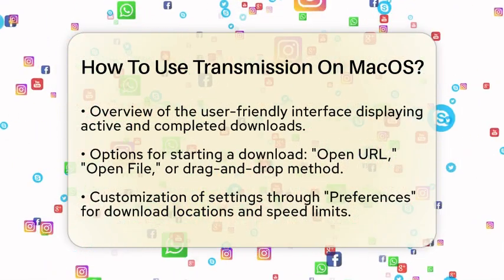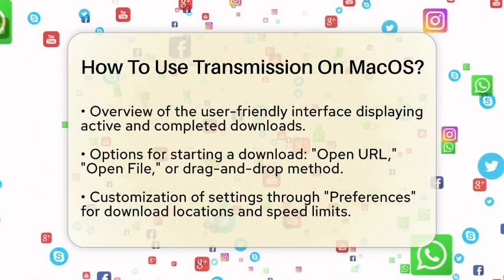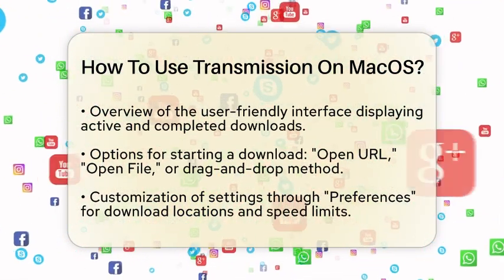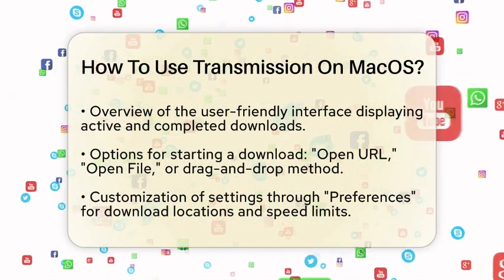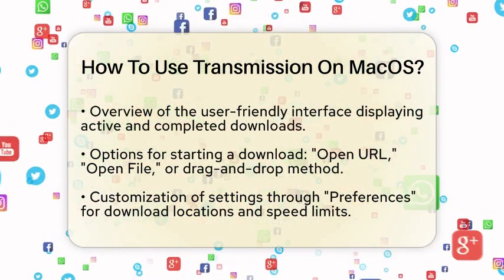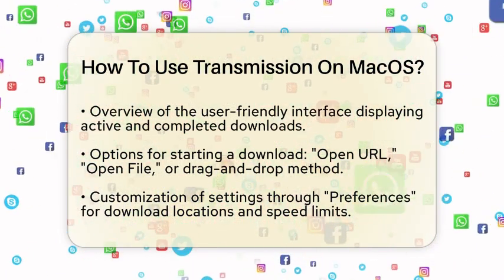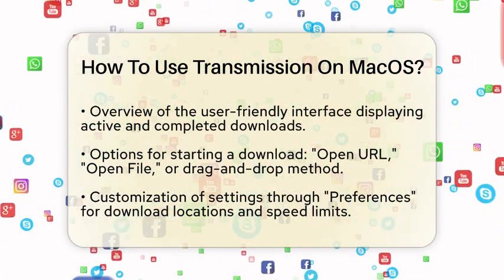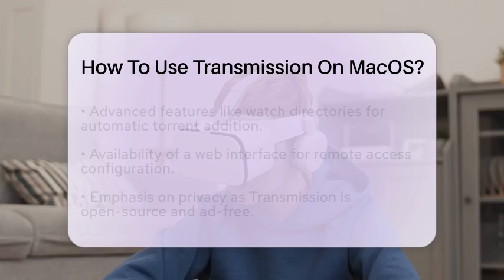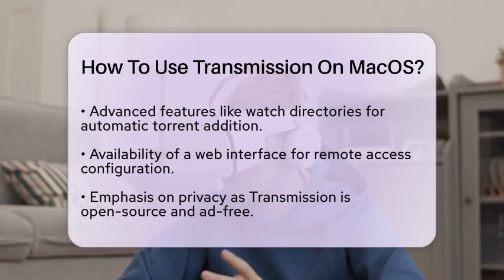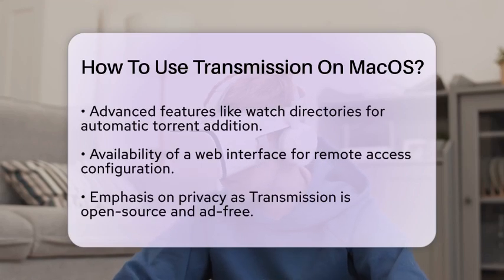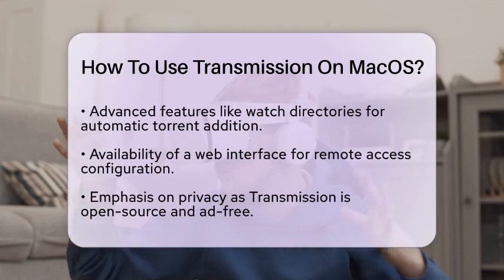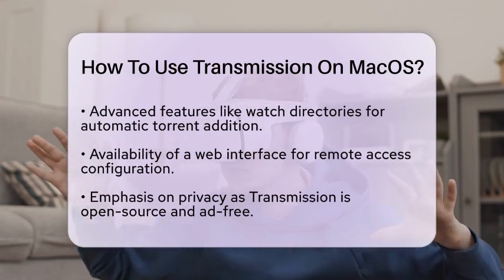Transmission allows you to customize various settings to suit your needs. You can set download locations, speed limits, and more by clicking on Preferences in the Transmission menu. This way, you can manage your downloads according to your preferences.